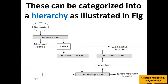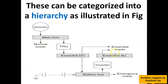These buses have a hierarchy. So what is the difference between the main bus, essential bus, and the battery bus? The main bus supplies normal loads, the essential bus supplies essential loads, and the battery bus supplies emergency loads.